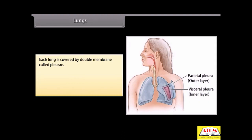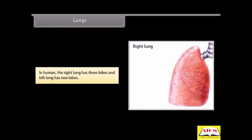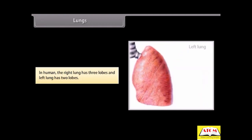Lungs. Each lung is covered by double membrane called pleura. The outer covering membrane of lung is called parietal pleura. The inner covering membrane of lung is called visceral pleura. In humans, the right lung has three lobes and left lung has two lobes.